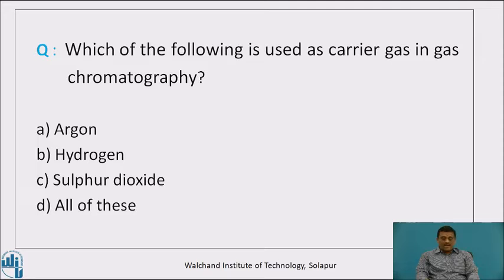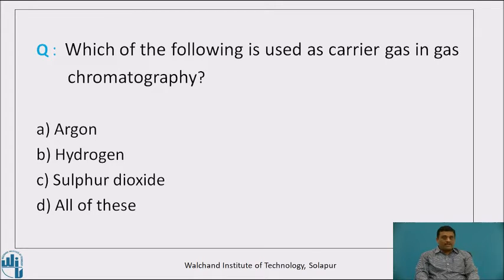Option A: argon. Option B: hydrogen. Option C: sulphur dioxide. Option D: all of these. Think for a moment and find out the answer — which of the following gas can be used as a mobile phase in gas chromatography?